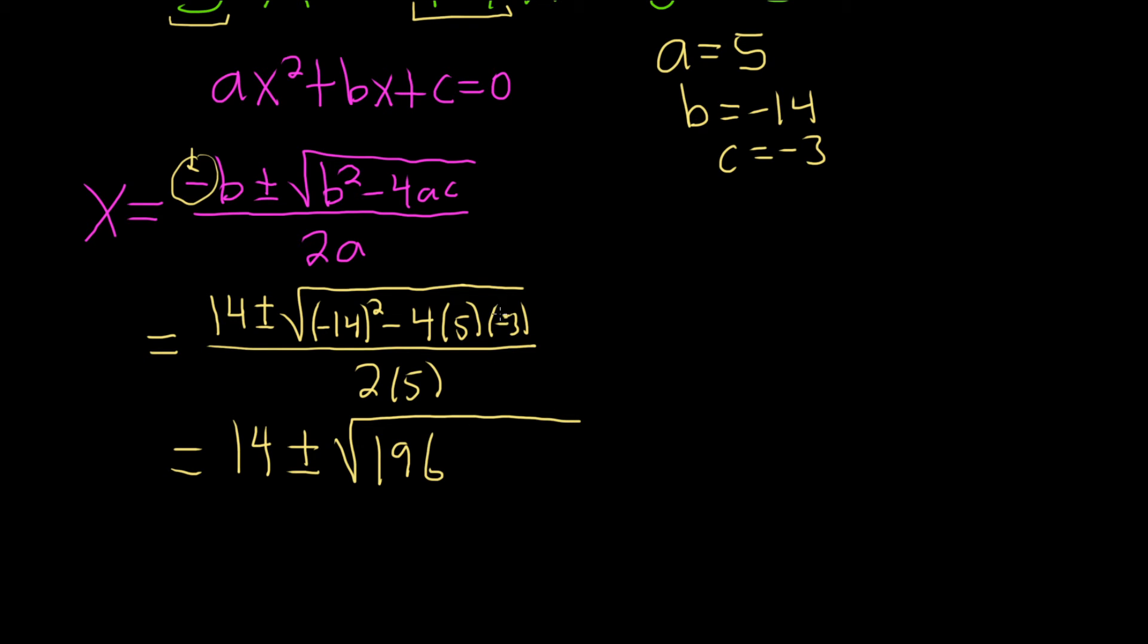This is really tricky. Look, there's a negative here and a negative here, so it will be plus. And 4 times 5 is 20, 20 times 3 is 60. That's all being divided by 10.